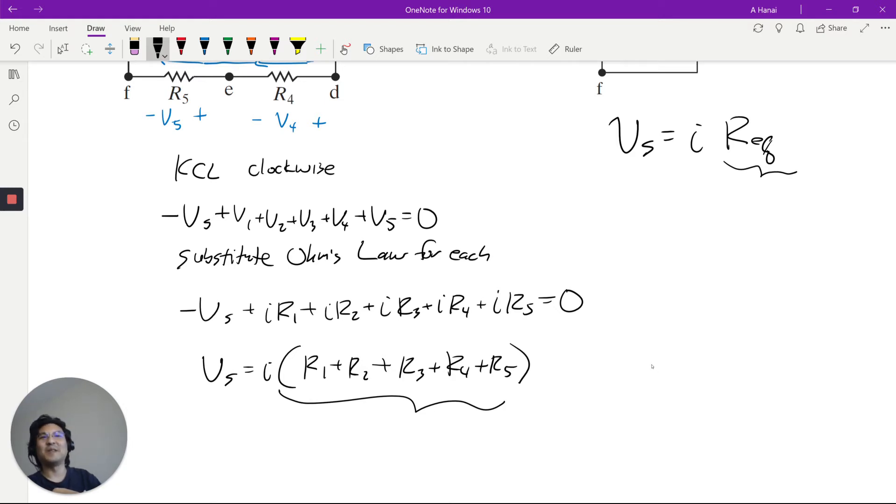So the equivalent resistance for resistors in series, you just add them. Okay, so that's pretty straightforward. You see a bunch of resistors in series, the equivalent resistance, add them up.